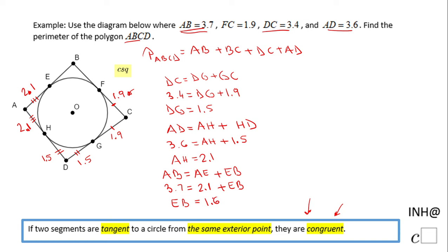That is how long the last segment here is, 1.6. And BF will be 1.6. But now having BF and FC we can find BC, because BC is nothing else than BF plus FC, and that will be 1.6 plus 1.9, which is going to be 3.5. This is how much BC is. Now we can go back here and replace AB with 3.7, which we knew from the beginning. BC we just found out, 3.5.